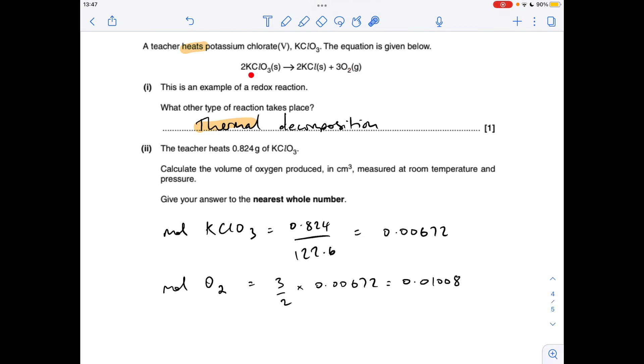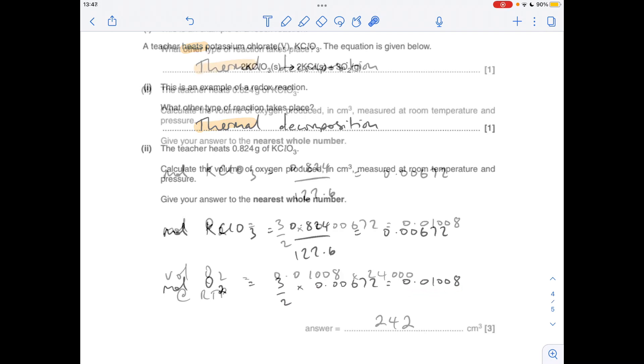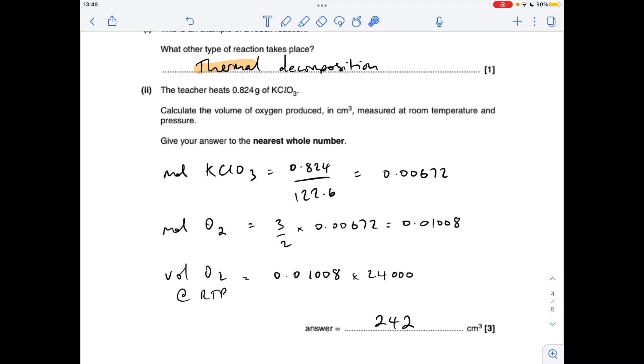So it's going to be 3 over 2 times the moles of potassium chloride 5, which gives us that number there. And then to get the volume of oxygen at RTP in centimeters cubed, we multiply the moles of oxygen by 24,000, which gives us 242 to the nearest whole number.